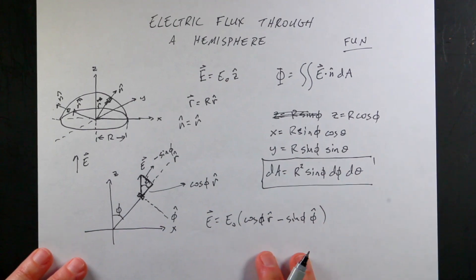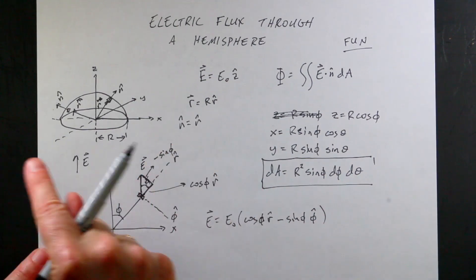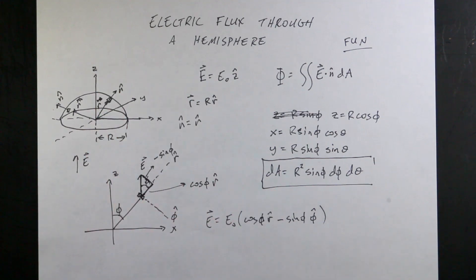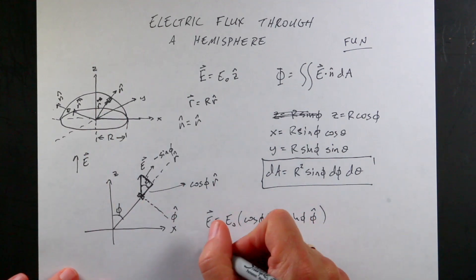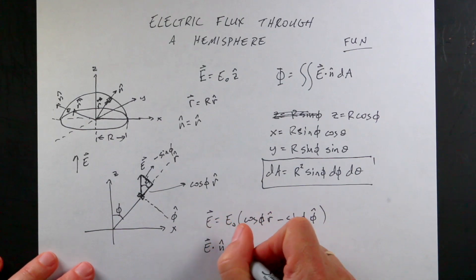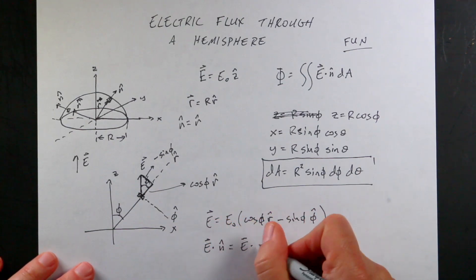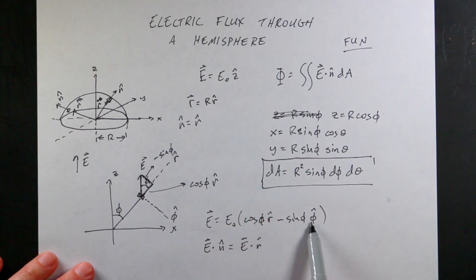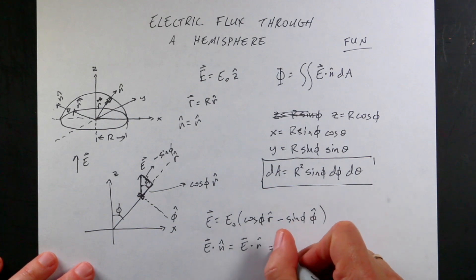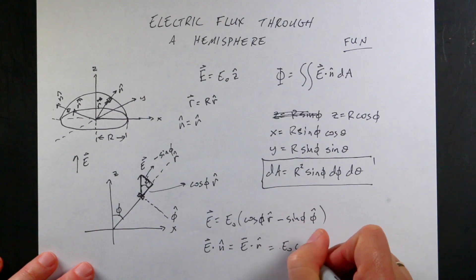There's no θ component — E is not pointing in the azimuthal direction, only up and to the side. So there's my E in spherical coordinates. Now I can do E dot n-hat. It's going to be E dot r-hat, and there's no φ-hat component to the unit normal vector — it's just r-hat. So I just get e0 cosine φ.